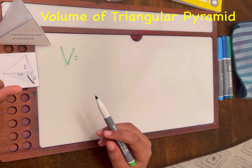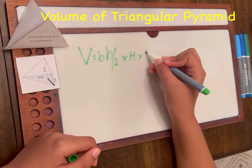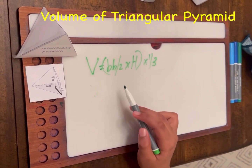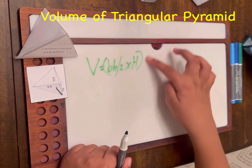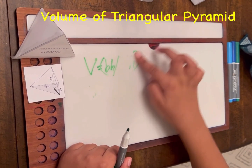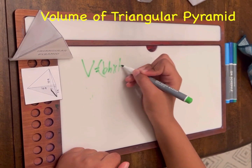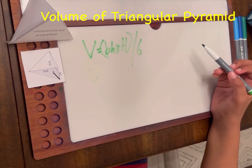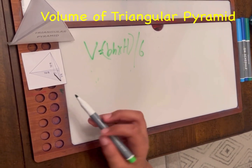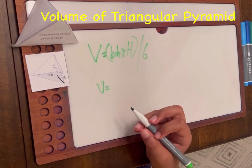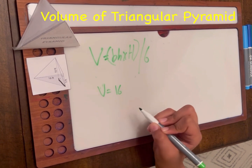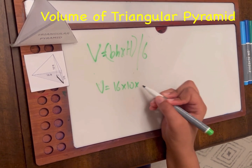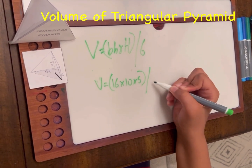To find the volume of a triangular pyramid, the equation involves multiplying by one-third. This can also be simplified as base times height divided by 2 times H, then divided by 3 — or equivalently, base times height times H divided by 6. That is another valid form of the equation. The base is 16 feet, the height is 10 feet, and the other height is 5 feet.